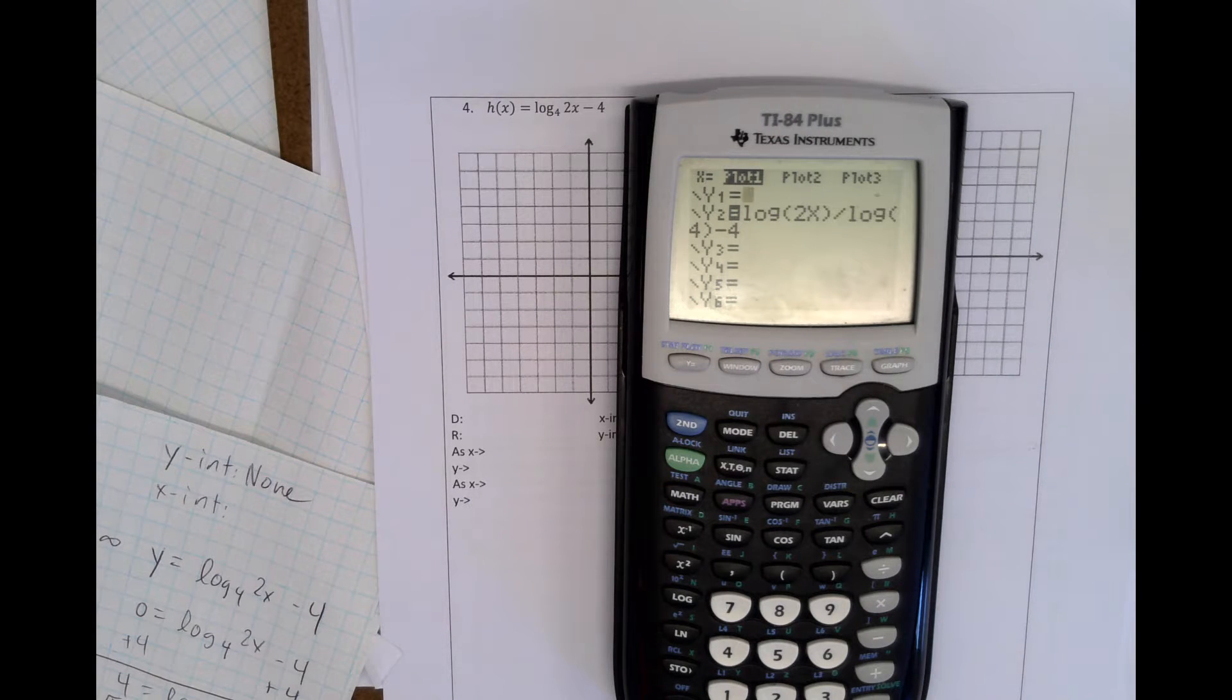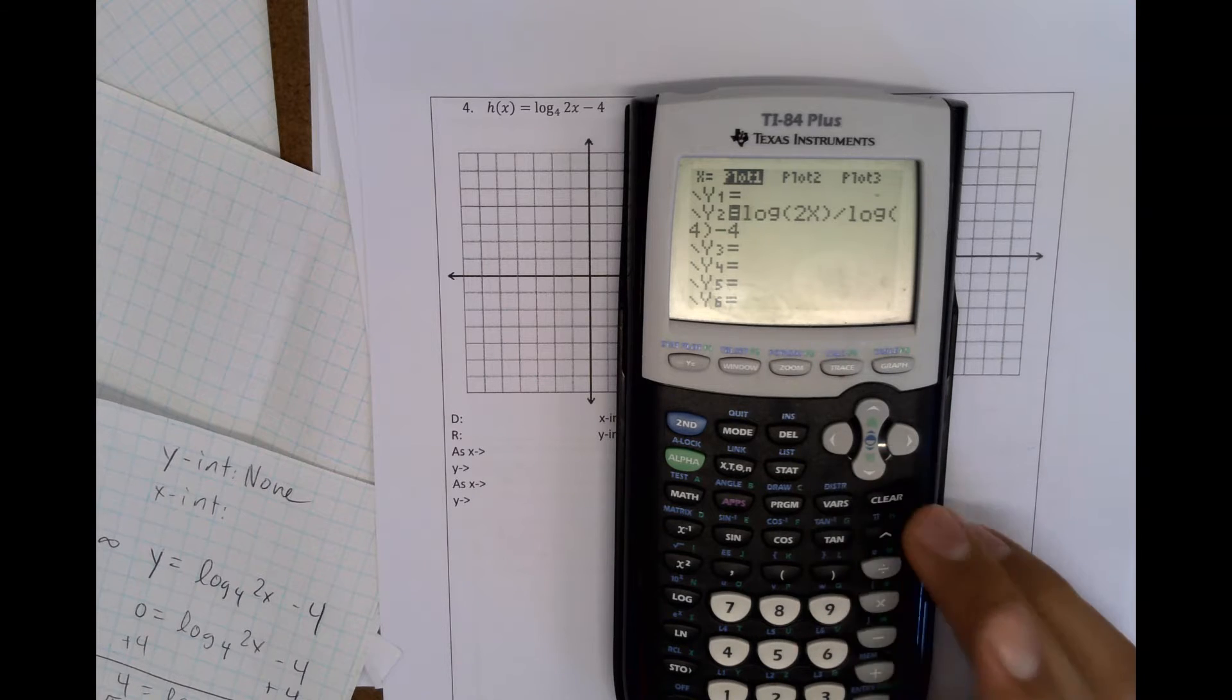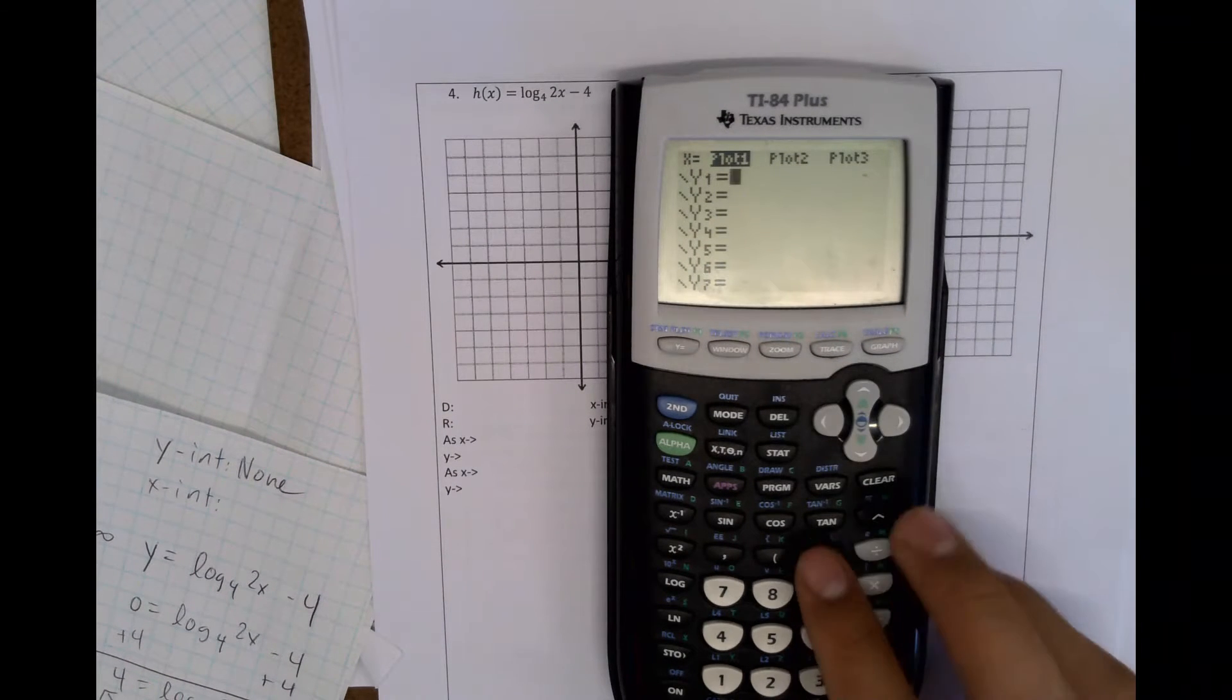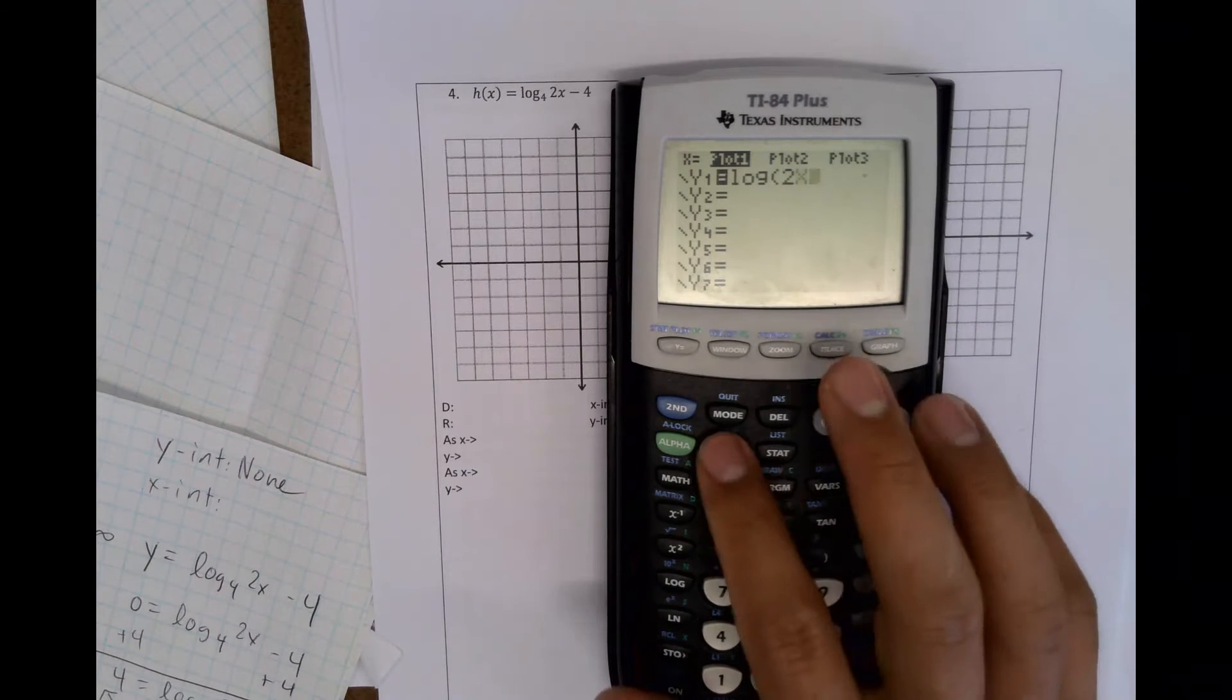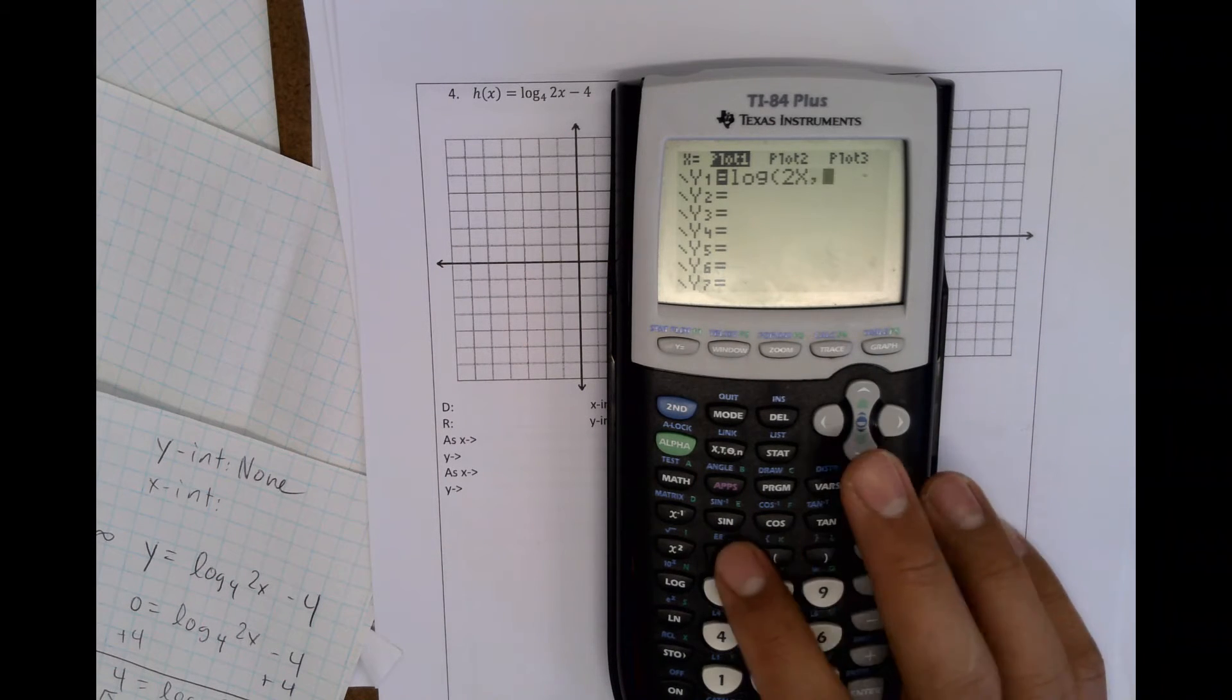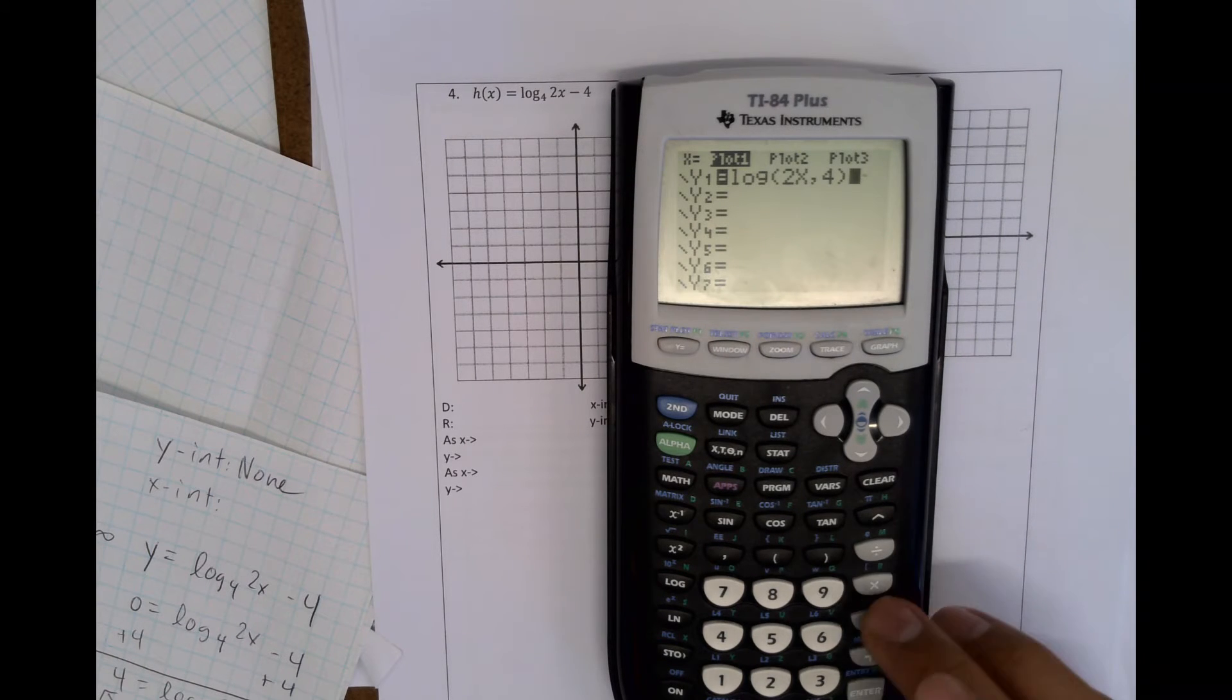Okay, so for this one, I'm going to show you two different ways. If you have a new calculator, you can type it this way. So for this one, you can type it as log 2x, 4, and then we're going to close it off, minus 4.